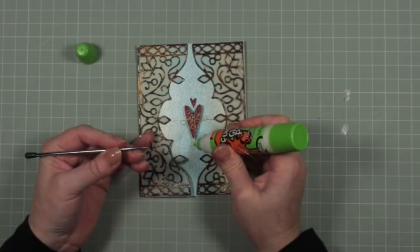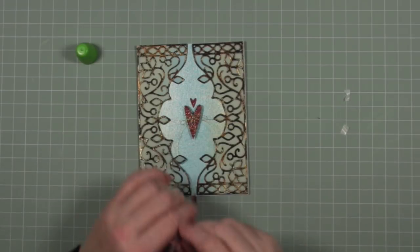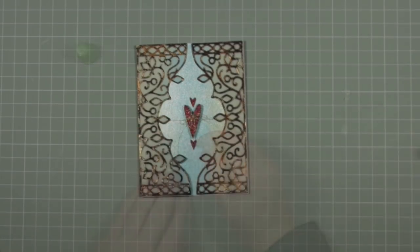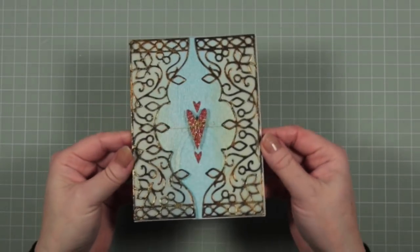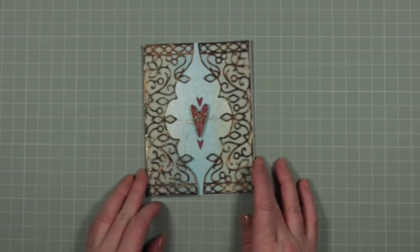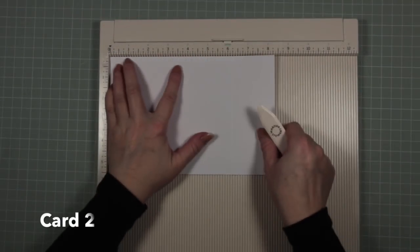I'm taking two of the smaller hearts from the Gummiapan die set and I'm going to stick them above and below the heart. And with that, my card is finished. I think that's quite an unusual exotic looking card.